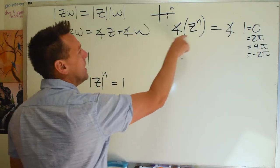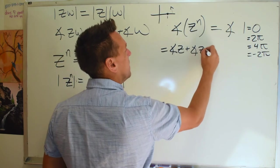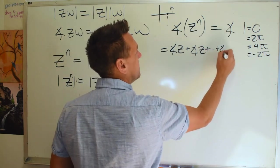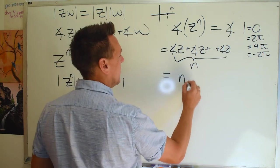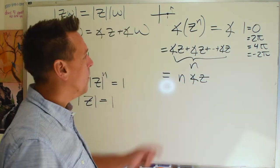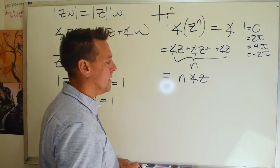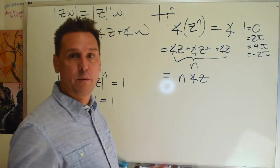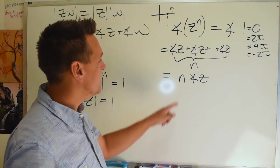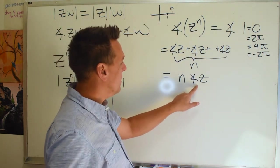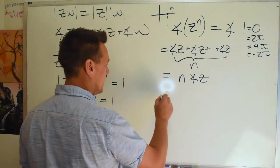But then from this fact here, the angle of Z to the n is going to be the angle of Z plus the angle of Z, on and on, n times the angle of Z added together, which is also n times the angle of Z. What this constraint tells us is that the angle of Z is going to depend on what n is. And that makes sense. We saw that i was a fourth root of unity, but not a second root of unity. And this means that the angle of Z is going to have to be an angle that when you add it to itself n times, you get back around to zero, you get to a full circle.